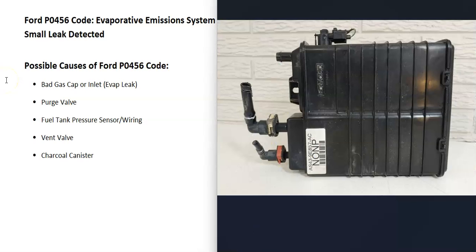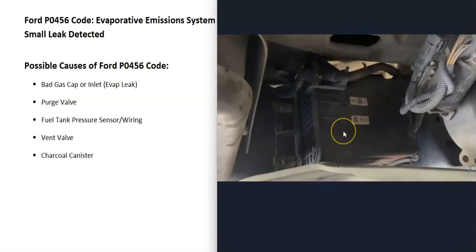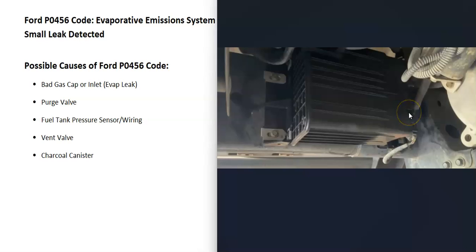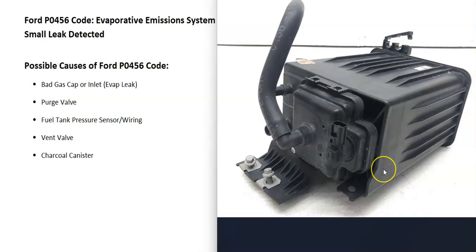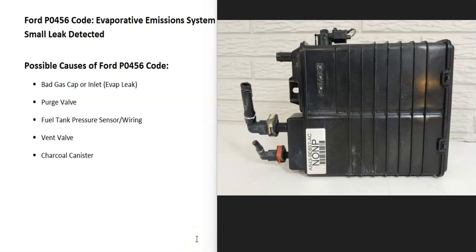The next possible cause is a bad vent valve or the charcoal canister. The charcoal canister is located underneath the vehicle near the gas tank, and quite often the vent valve is built into the charcoal canister, though sometimes it can be separate. If the vent valve gets stuck open, that could cause a leak and trigger issues. Also, any damage to the charcoal canister itself can cause a leak.